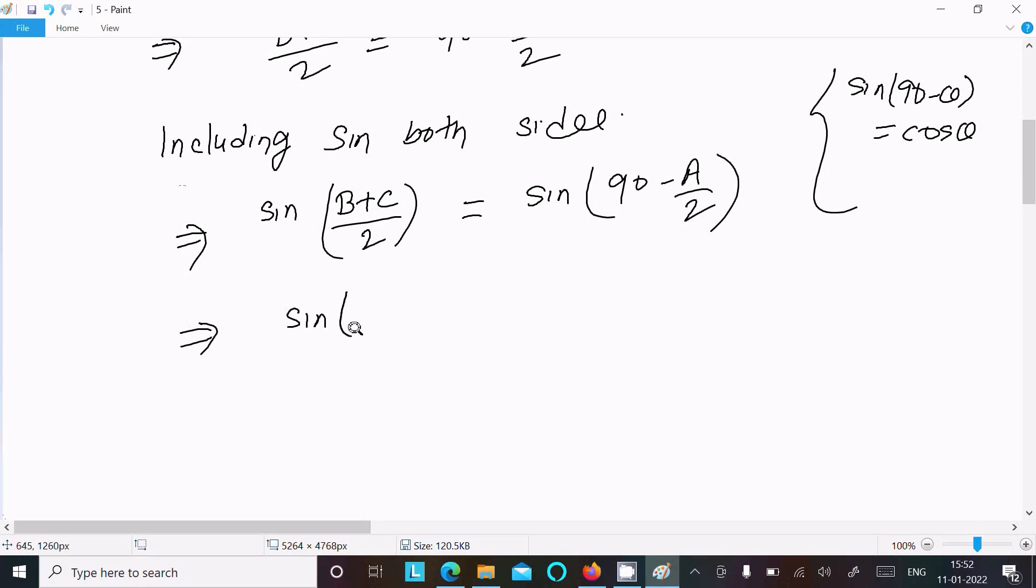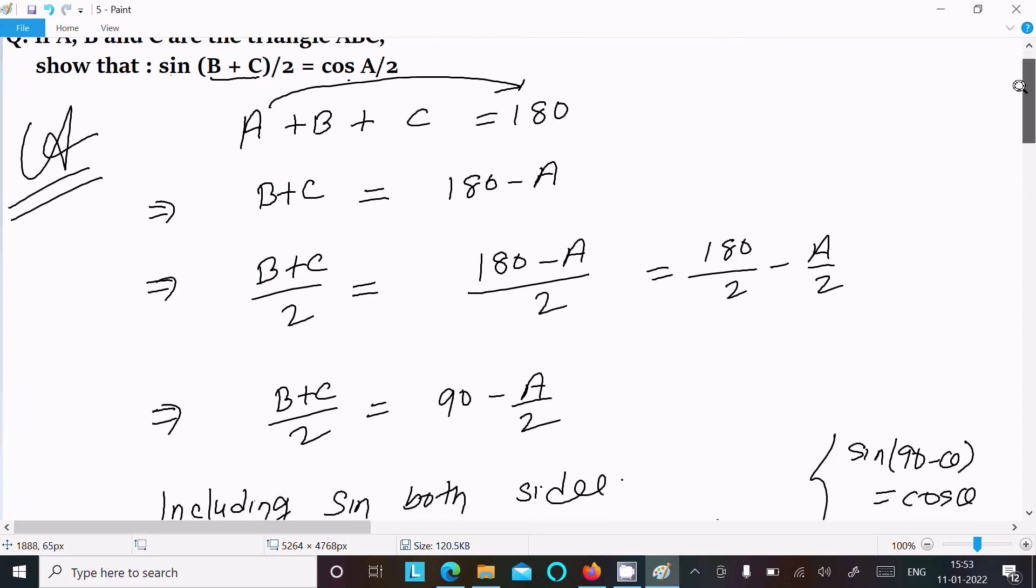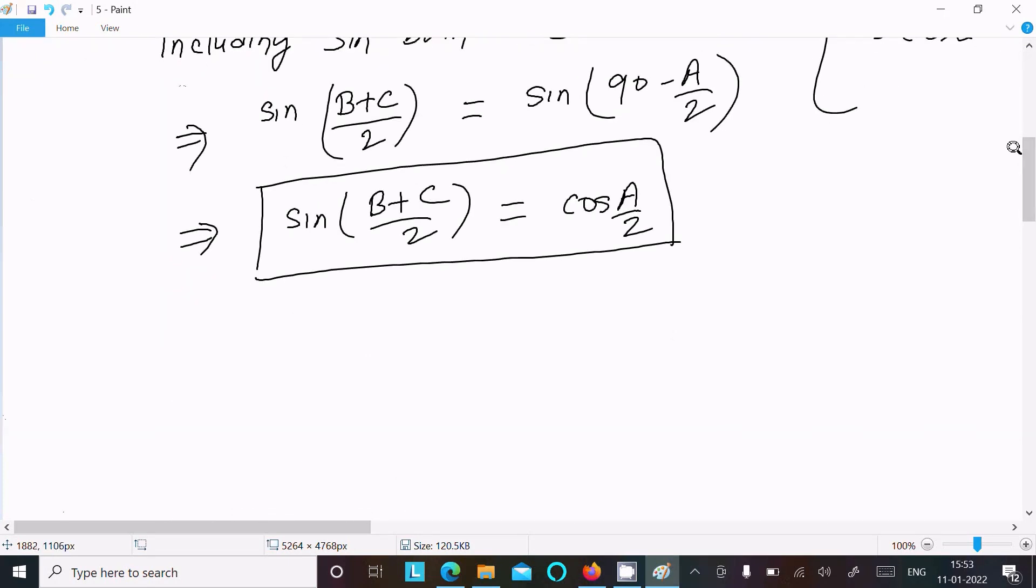We can write sin((B+C)/2) = sin(90 - A/2), which is equal to cos(A/2). So this is the proof of this question.